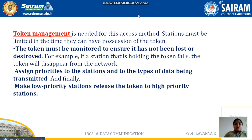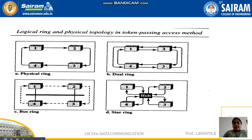Token management means the data circulates priority-wise — from low priority to high priority — from one device to another device. This is what the local ring physical topology is for the token passing method. There are four diagrams given here.